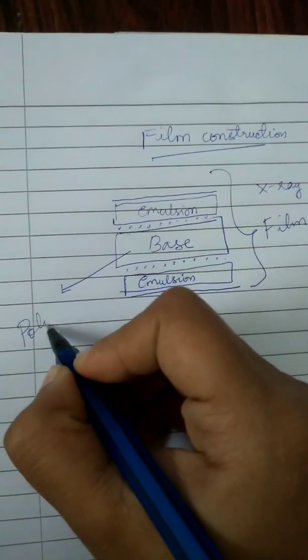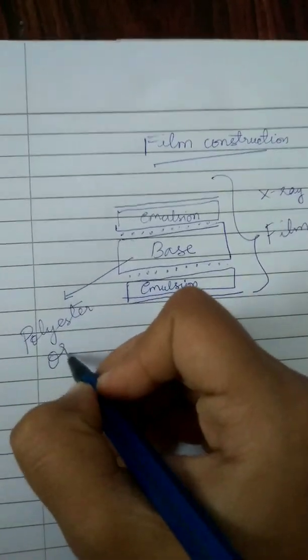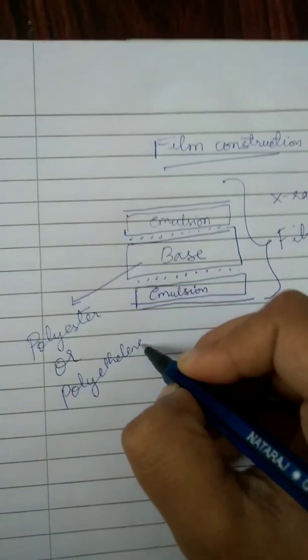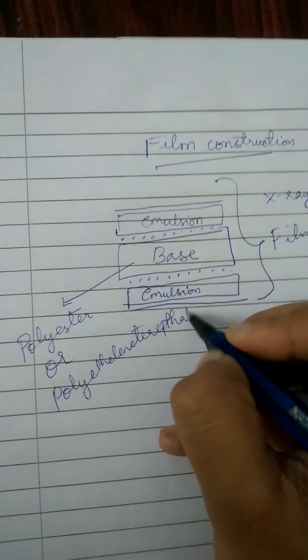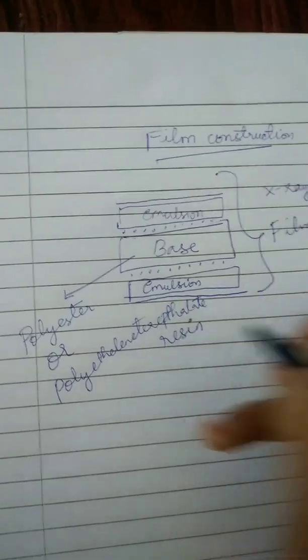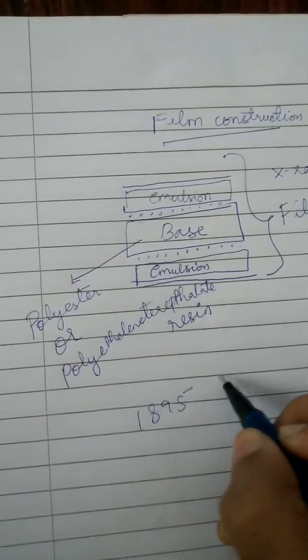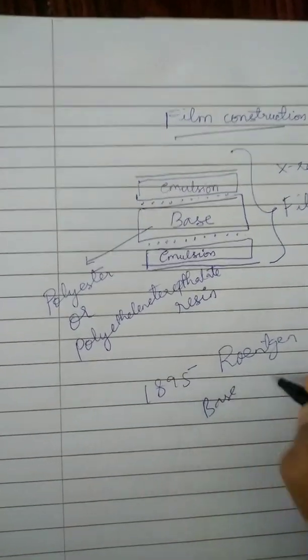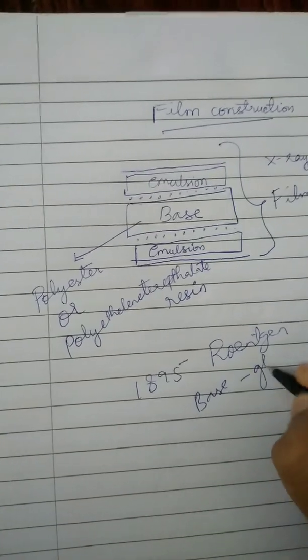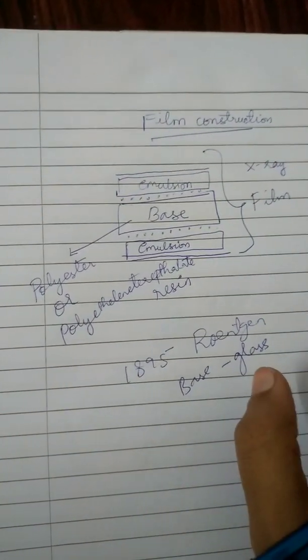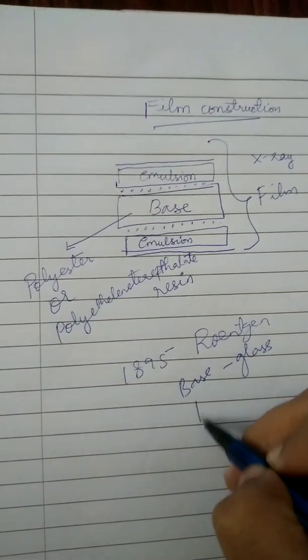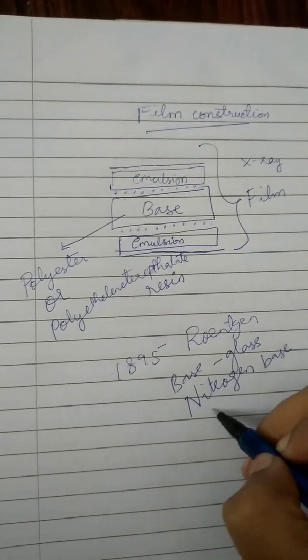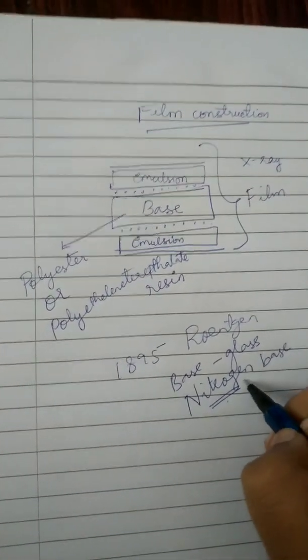So the base was made up by polyester or polyethylene phthalate resin. In 1895 when Roentgen invented x-ray the base was made by glass. But it was very difficult to handle. That's why it has been replaced by nitrogen base material and later it was insufficient and it was very difficult to manage.